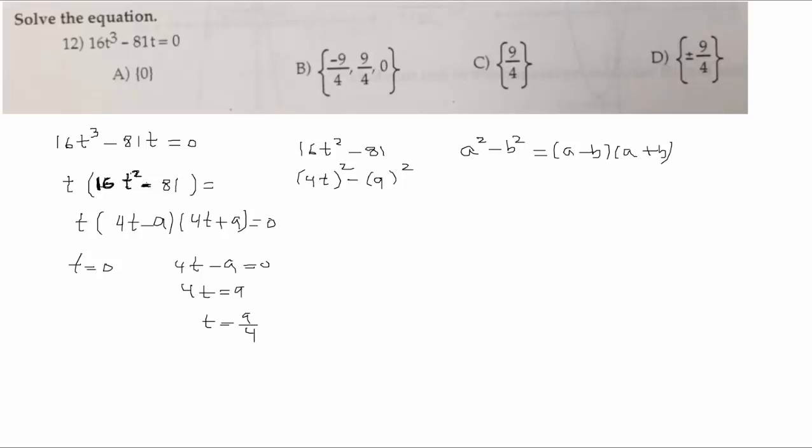So T is equal to 0. That would be one solution. 4T minus 9 is equal to 0. So 4T is equal to 9. T is equal to 9 over 4. That's another solution. 4T plus 9 is equal to 0. 4T is equal to minus 9. T is equal to minus 9 over 4. That's another solution.